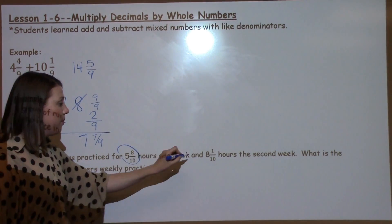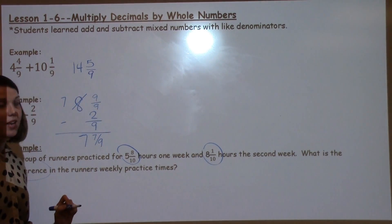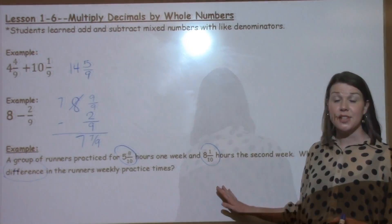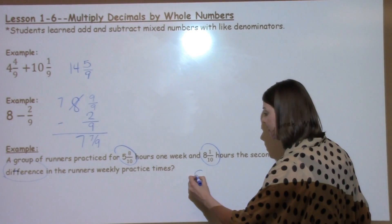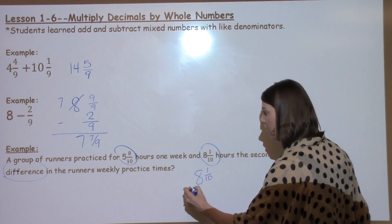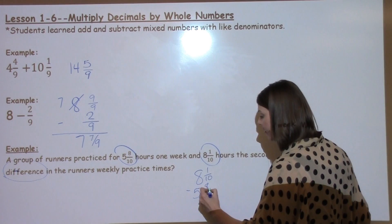Here are my two numbers in my problem. So I need to subtract 8 and 1 tenths minus 5 and 8 tenths. Okay, to set up this problem, I'm going to take 8 and 1 tenths minus my 5 and 8 tenths.